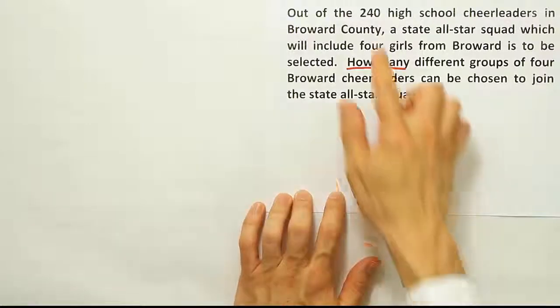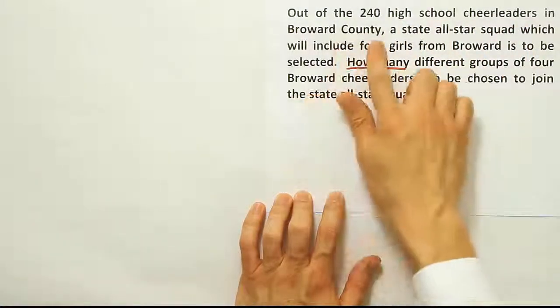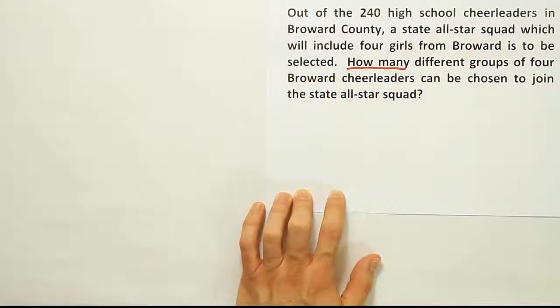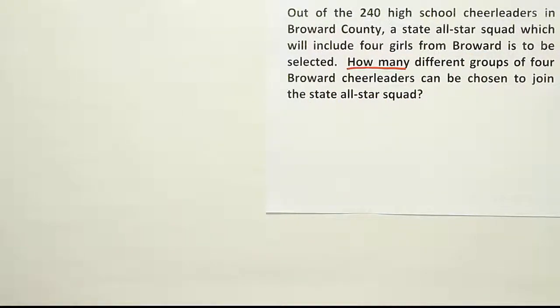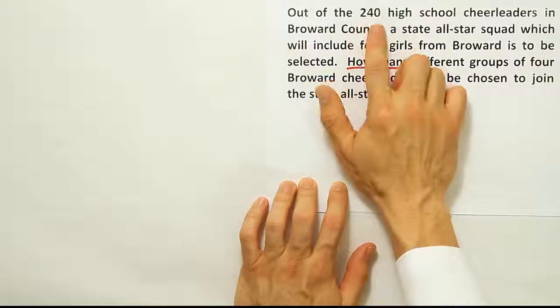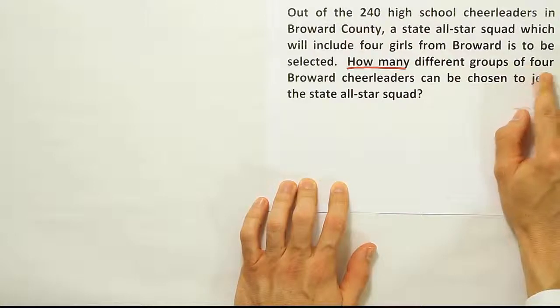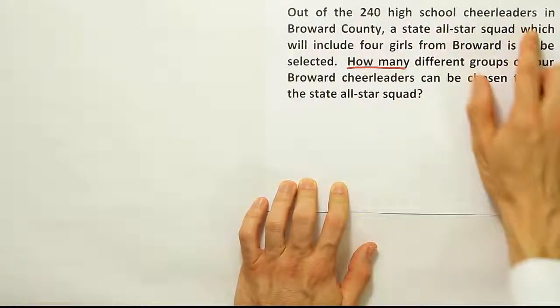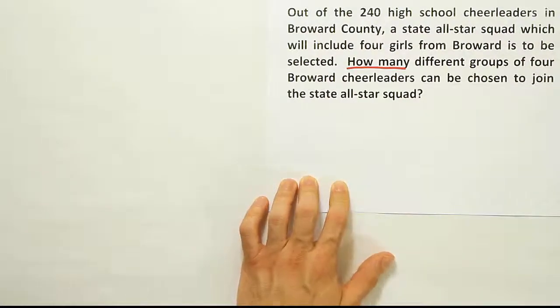Out of the 240 high school cheerleaders in Broward County, a state all-star squad which will include four girls from Broward is to be selected. How many different groups of four Broward cheerleaders can be chosen? For it to be a combination, we would have to have a large set of something and be choosing some subset. Well, it looks like we have that here. 240 high school cheerleaders, we're choosing a subset of four. So I think that requirement is met.